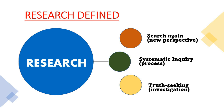Research is considered a systematic inquiry because it is an organized process of questioning and collecting information regarding a topic or problem. It is truth-seeking, for we conduct one when we desire to investigate and dig deeper on a certain issue or phenomenon. We do it to gather factual evidence to prove our belief or claim.